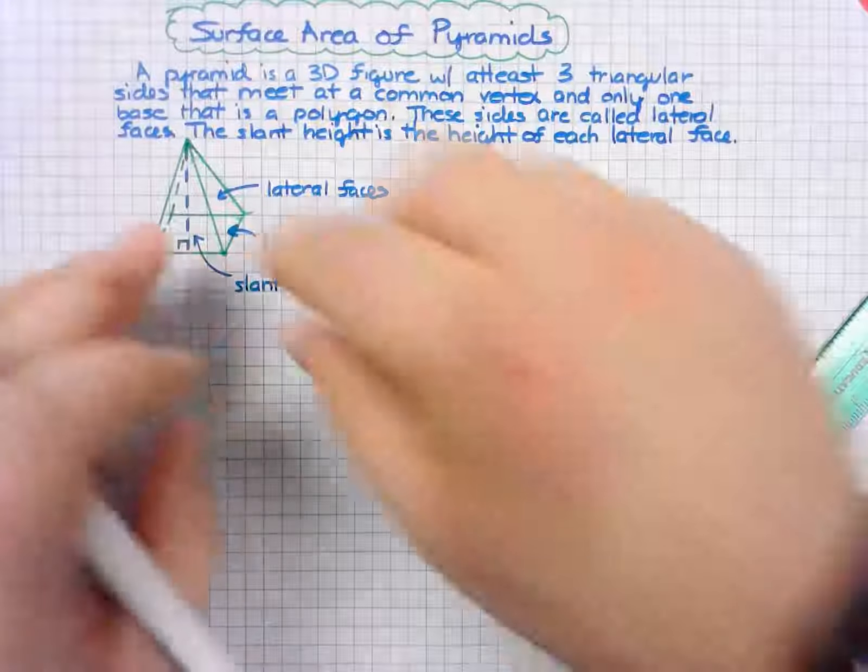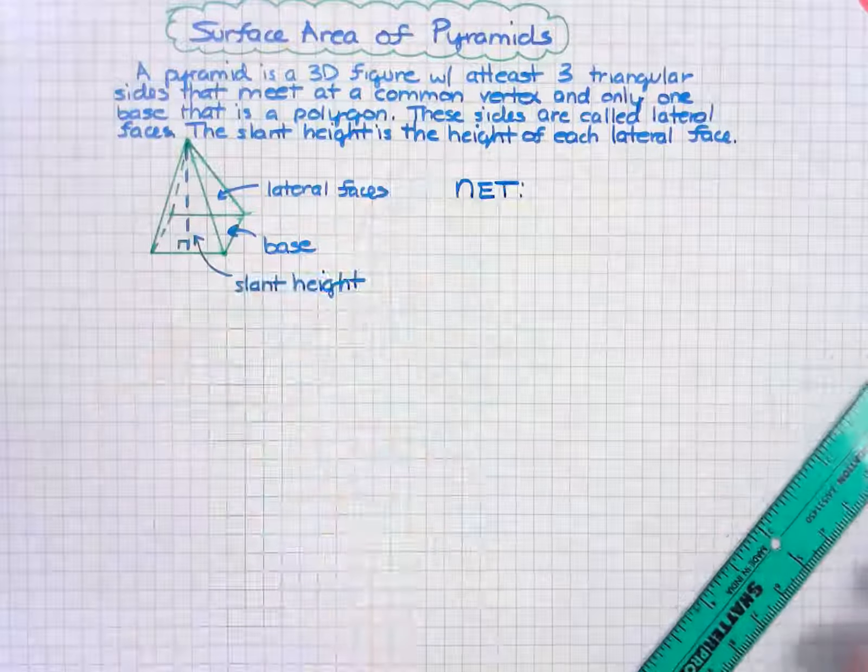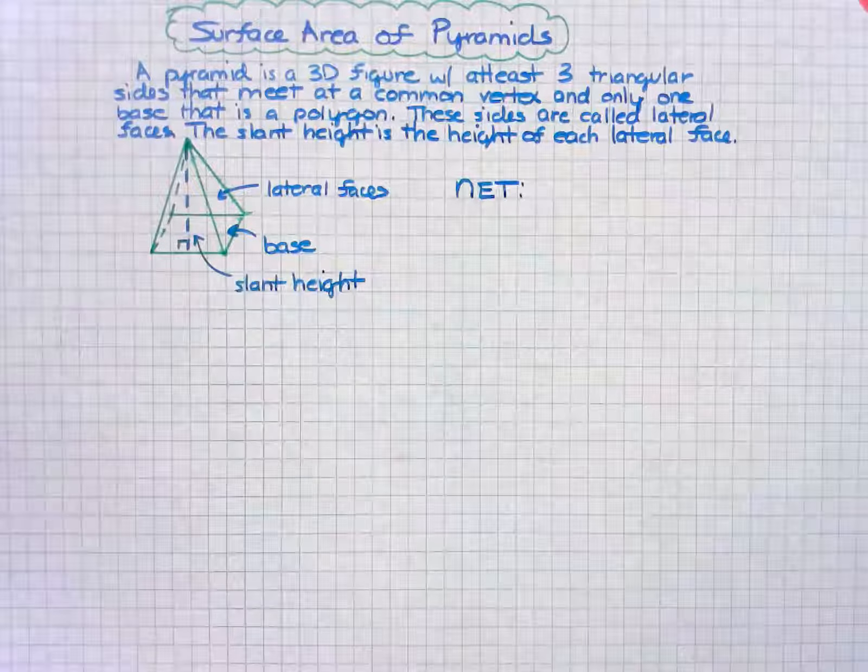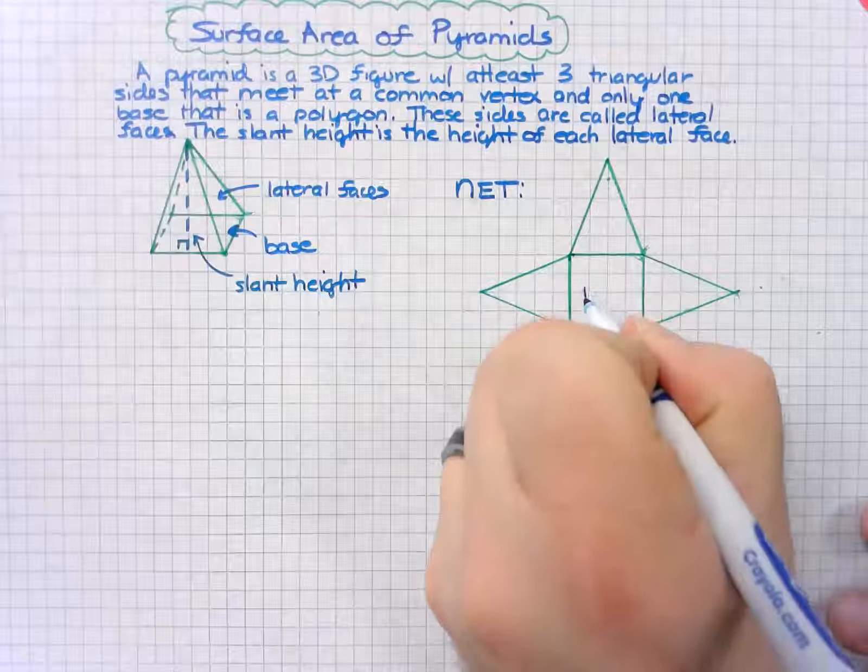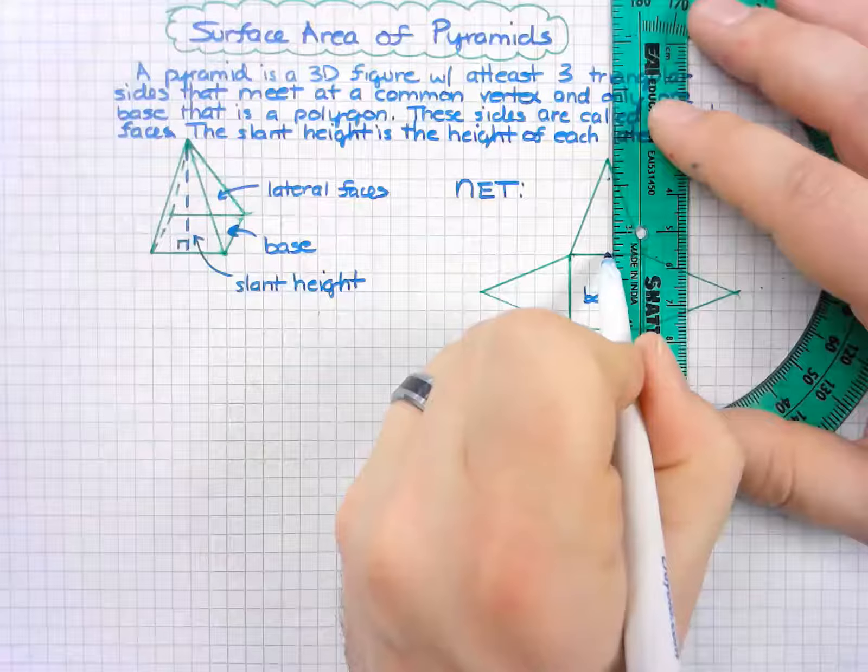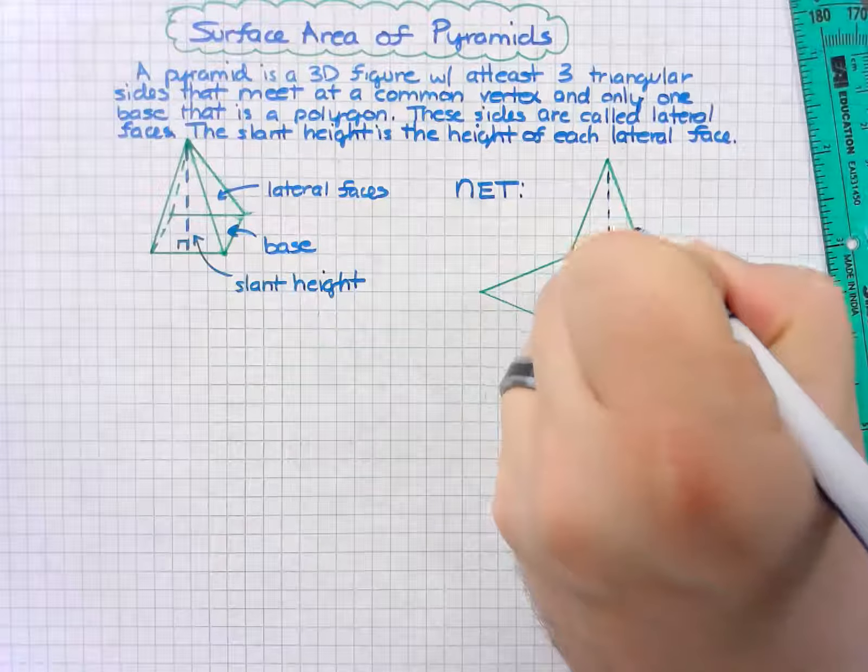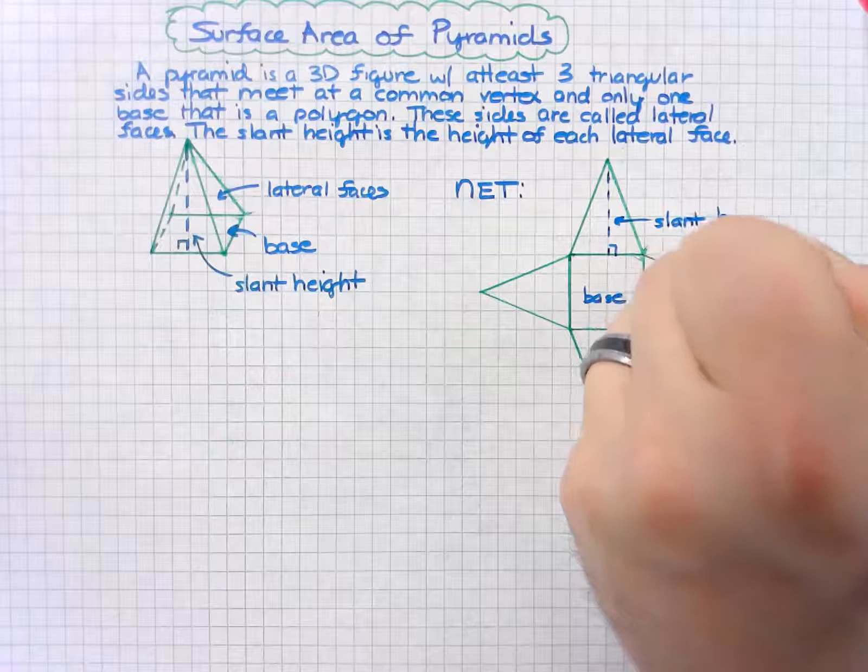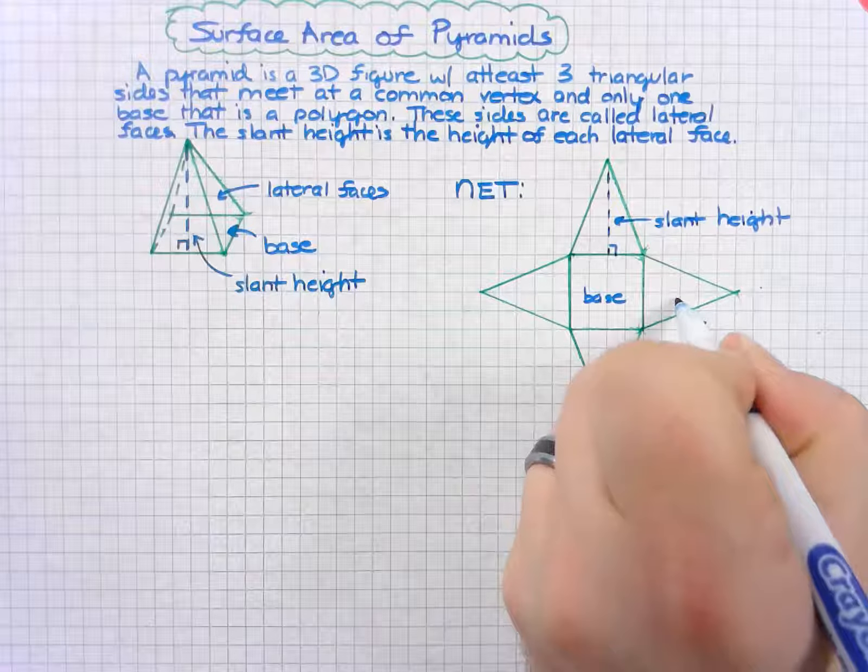If we open this up, we can create a net. I'm going to have a square base with four triangles coming out on all four sides. Here is my base. Here is my slant height, which is the height of our triangle, our lateral face. These are our lateral faces.